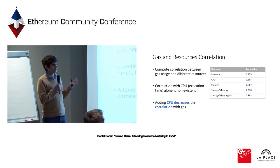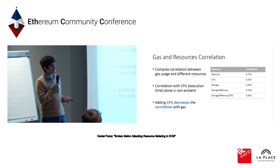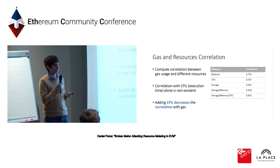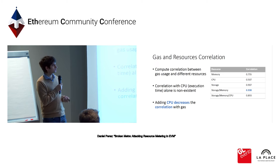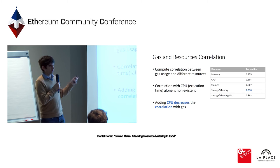We looked at the correlation between gas and different resources. We thought that storage, being the most expensive thing in Ethereum, would be most correlated — and this was the case. We then correlated storage and memory with gas cost, which increased the correlation as expected. Finally, when we added CPU as a metric, instead of increasing the correlation as we'd have expected, it actually decreased it. This suggests there is no real correlation between the time it takes to execute a contract and the actual gas cost.